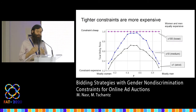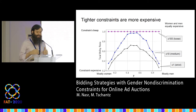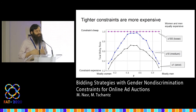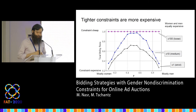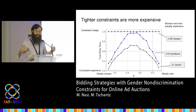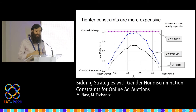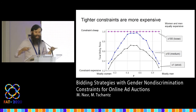We evaluated our approach on a combination of real and synthetic data. This plot shows the ratio of the utility of the advertiser subject to constraints divided by what the utility would have been without constraints. The x-axis shows the ratio of how common male and female ad slots are. The different lines correspond to different approximate parity constraints — for example, the top line requires that the number of male and female ads are equal plus or minus 100.